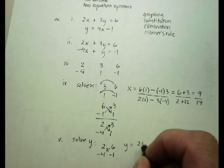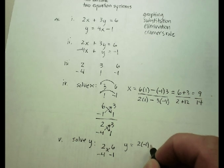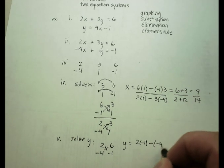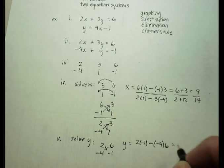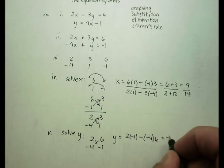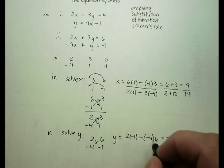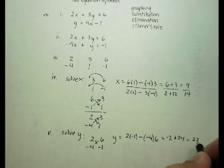I'm going to get 2 times negative 1, minus negative 4 times 6. That's going to give me a negative 2, plus 24, or 22.